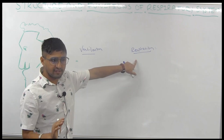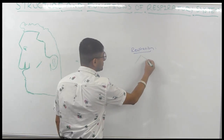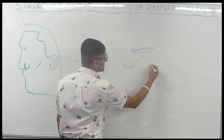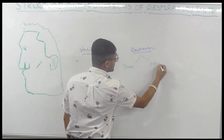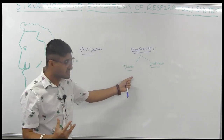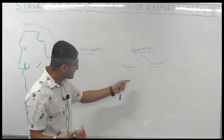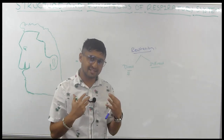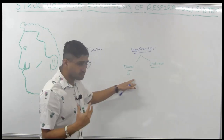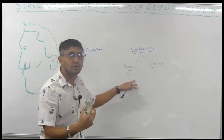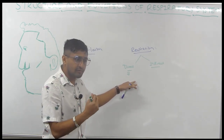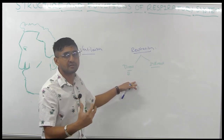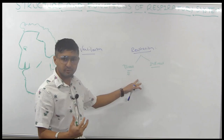Respiration is different, and it's divided into two types: direct respiration and indirect respiration. Direct respiration means that whenever gas exchange happens, oxygen directly contacts the tissue — oxygen is directly in contact with the tissue.